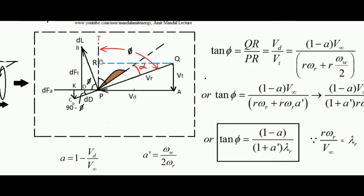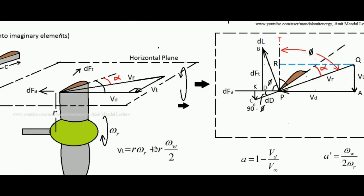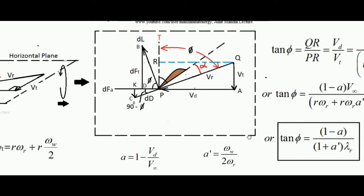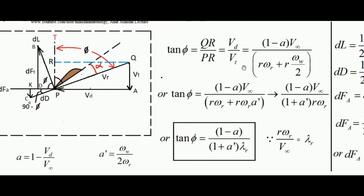RQ is the perpendicular and RP is the base, so QR upon PR will be tan phi. QR is actually equal to VD — you can see QR and VD are the same. So VD upon PR gives tan phi, and in the denominator it is VT. VT equals R·ωR plus R·ωW/2, as already derived. I have written that over here.